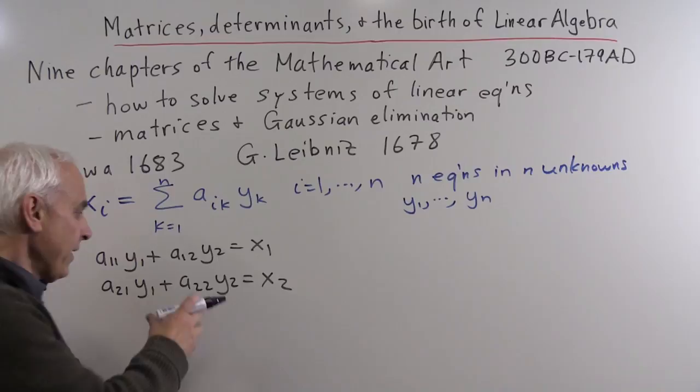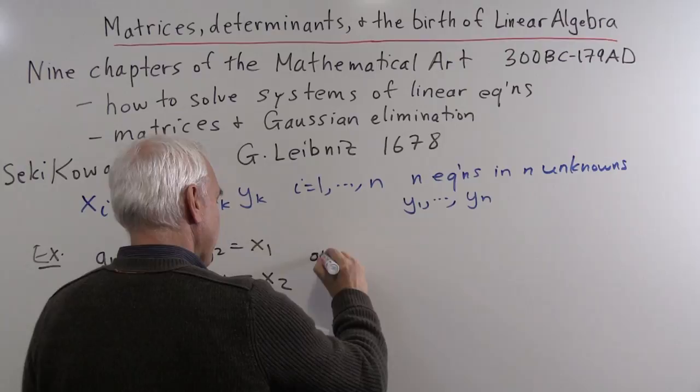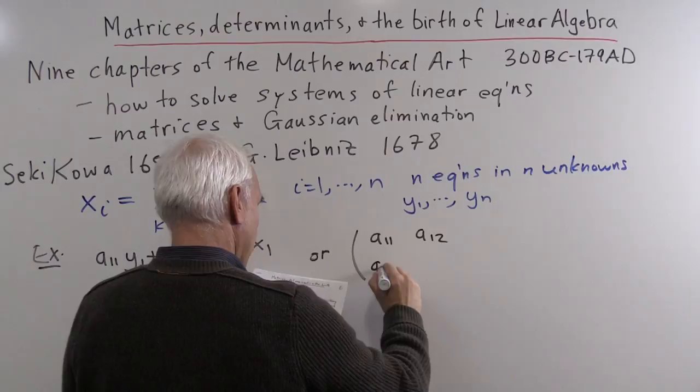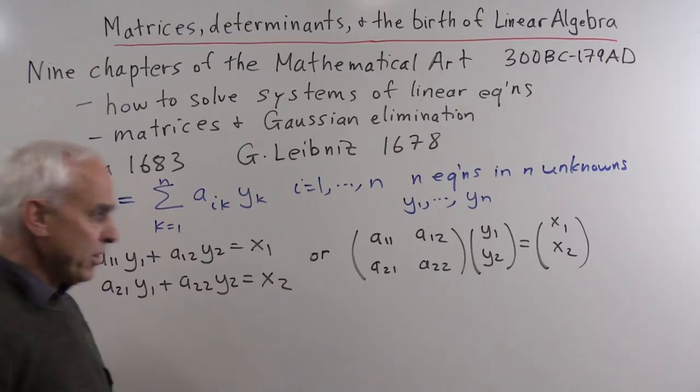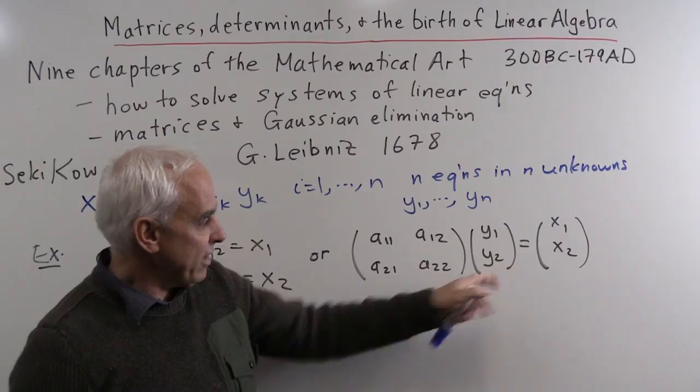These days we like to write this system in matrix form by introducing a matrix or array: [A11, A12; A21, A22] times the vector [Y1; Y2] equals [X1; X2]. Here we're using matrix multiplication — how we multiply a 2 by 2 matrix by a column vector. This is a short form for the system of equations.